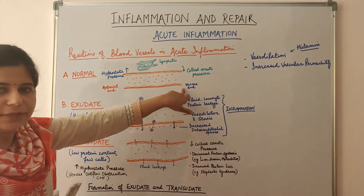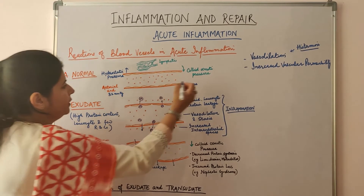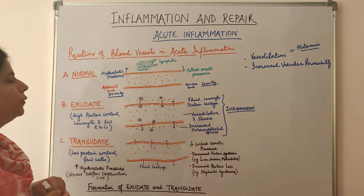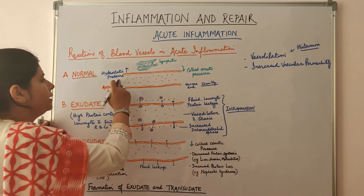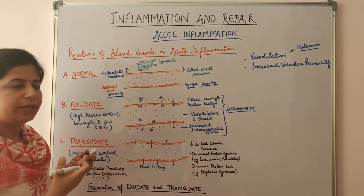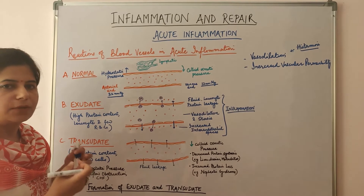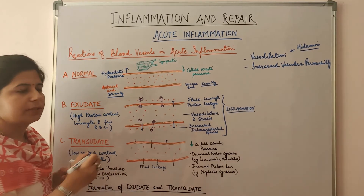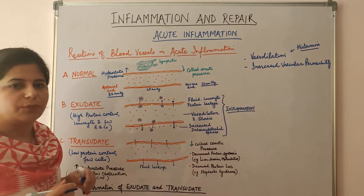At the arterial end, hydrostatic pressure is 32 mmHg, and at the venous end it is 12 mmHg. Hydrostatic pressure has a tendency to move fluid and salts out of the circulation into the interstitial tissue. Colloid osmotic pressure is the opposing force — it tends to take back the fluid and salts from the interstitial space into the circulation. The mean capillary pressure comes out to be 25 mmHg, which is the same as the colloid osmotic pressure.